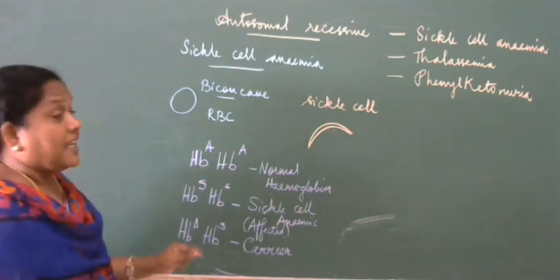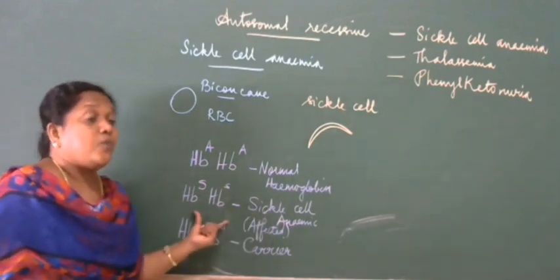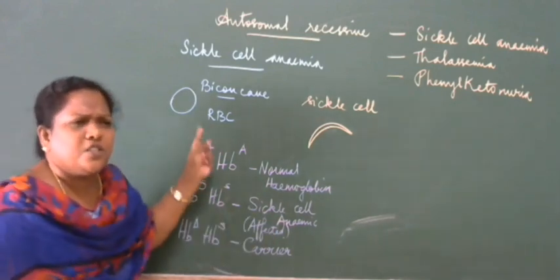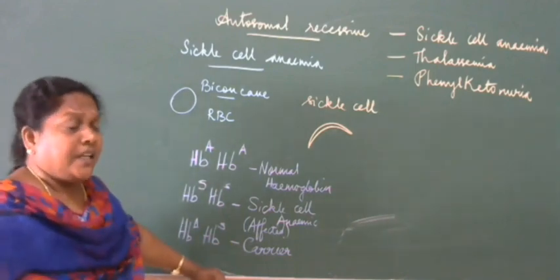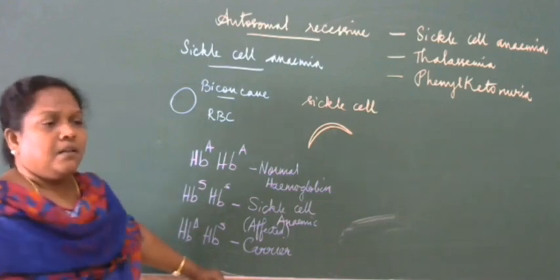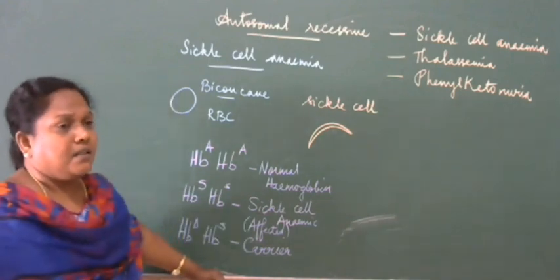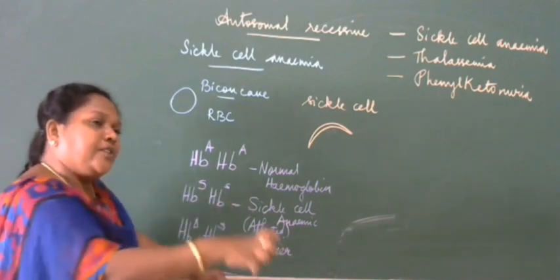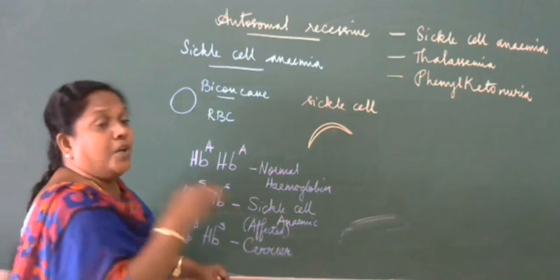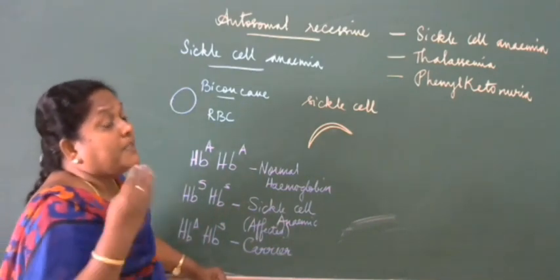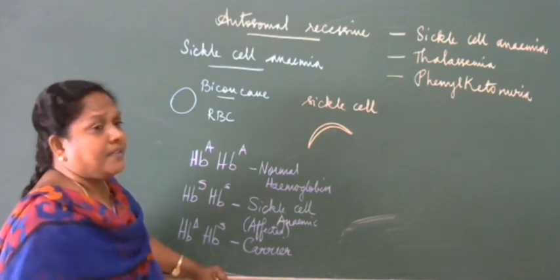But in the case of a sickle cell anemia patient, the hemoglobin is not normal. Hemoglobin carries oxygen and carbon dioxide — it transports gases. If the hemoglobin is not normal, it will not be able to carry oxygen and carbon dioxide. There will be obstruction in the free movement of blood in the blood vessels, and the person will not be able to survive.